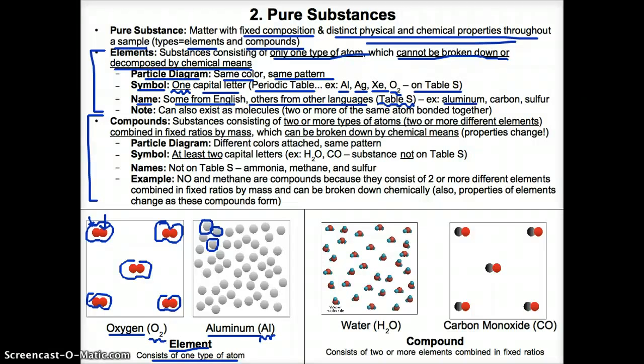For example, aluminum is listed on table S, and since table S only lists elements, aluminum is an element. Same thing with carbon — it's listed on table S, so it's an element. Sulfur is also only listed on table S, so it is an element.